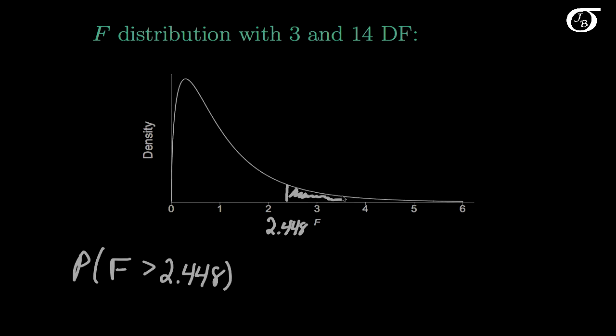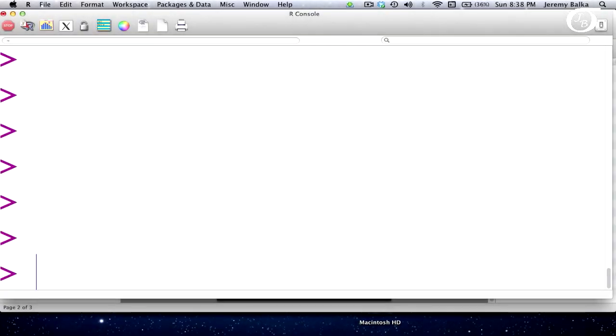And we can find that in R. Here in R, if I use the command PF, this is the cumulative distribution function of the F distribution, or in other words the area to the left of the value that I put in.